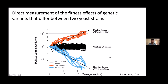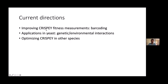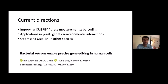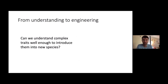We're currently working in many ways to improve the system — in technical aspects like barcoding, in different yeast applications such as genetic interactions involving epistasis as well as gene-by-environment interactions, and optimizing CRISPY for use in other species. We have a preprint on BioRxiv showing we can use this system in human cells as well, although not yet as efficient as in yeast.